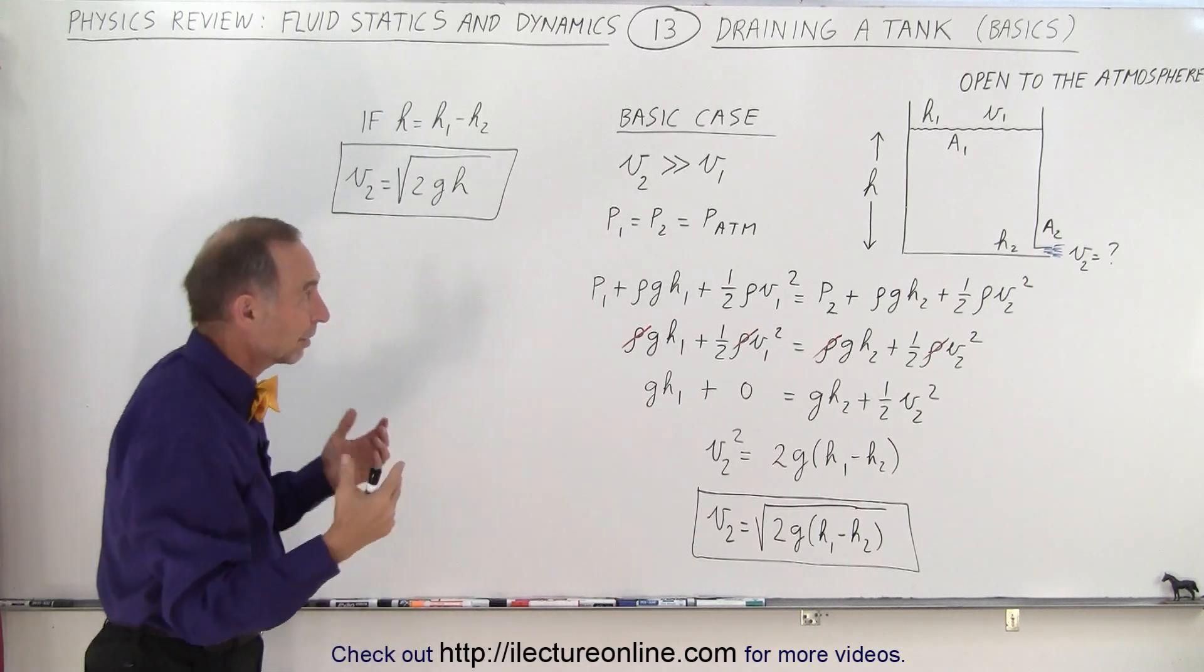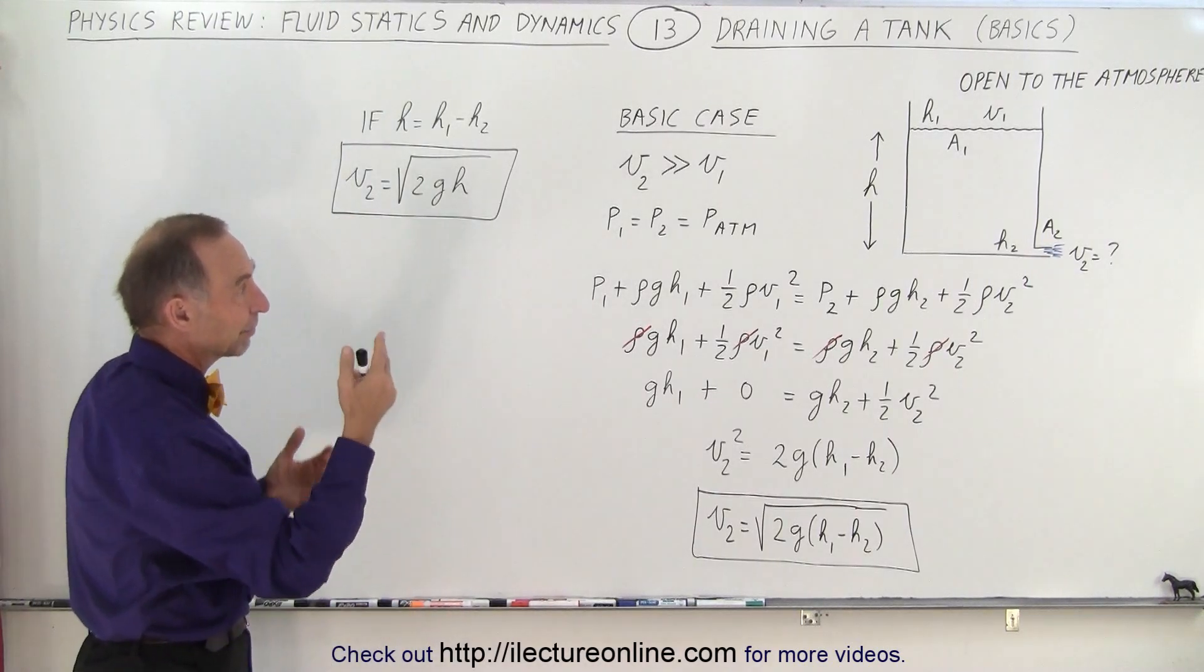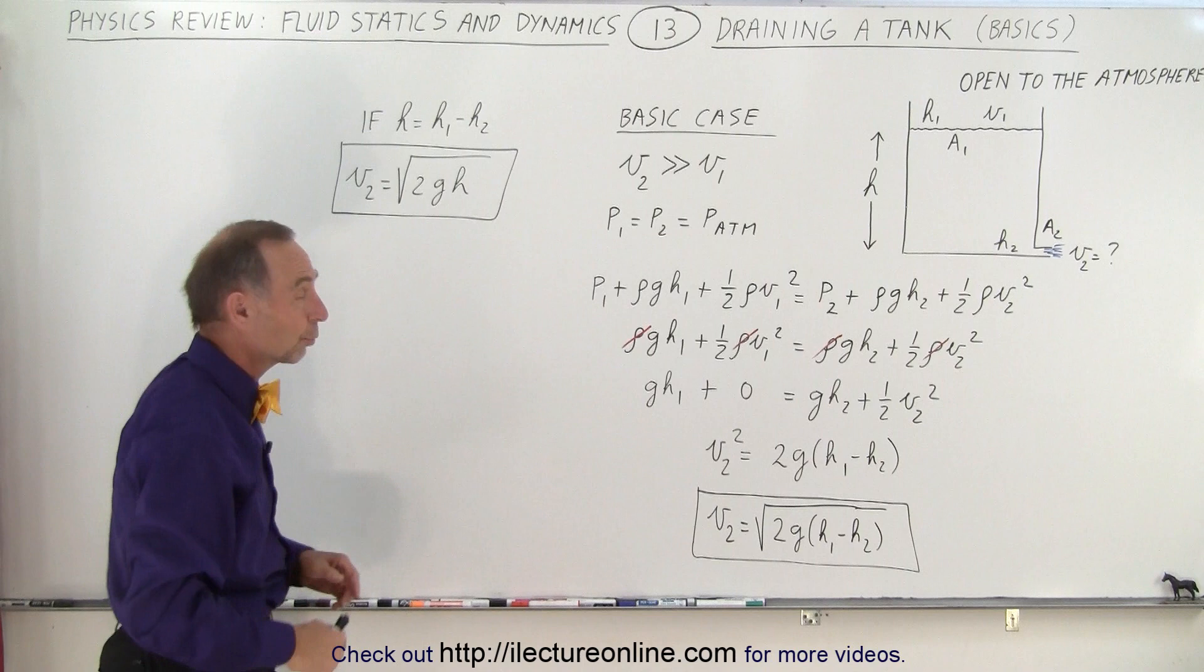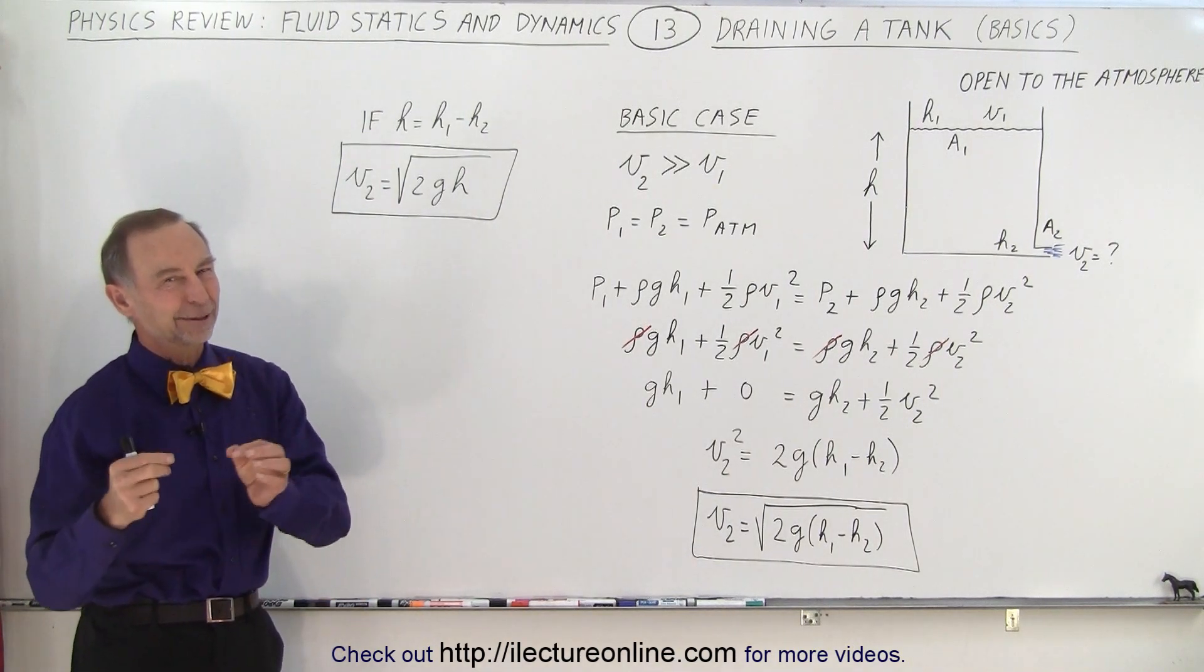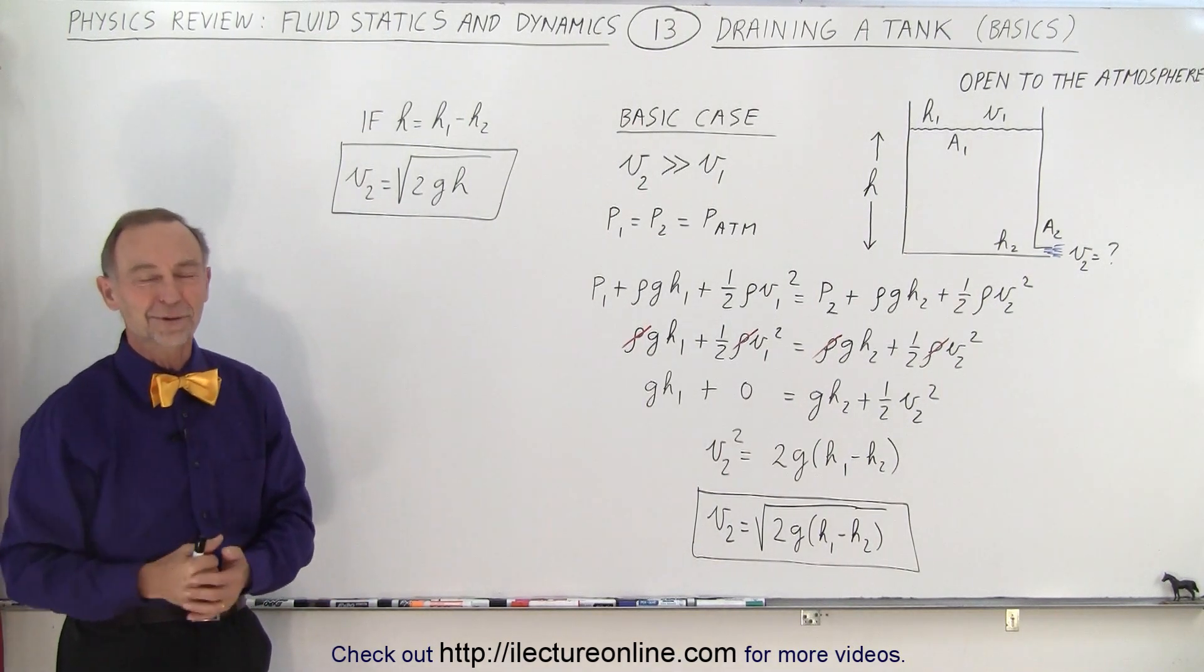So ignoring all other effects, friction, viscosity, anything like that, the velocity at the bottom will then be equal to the square root of 2gh, and that's why they call that the basic case, and that is how it's done.